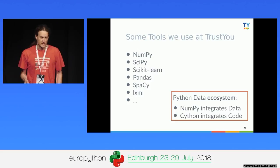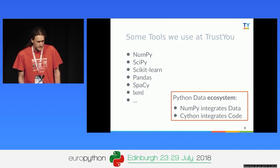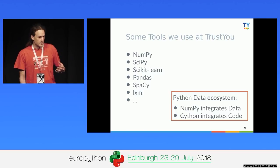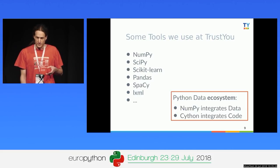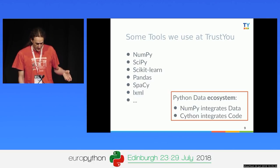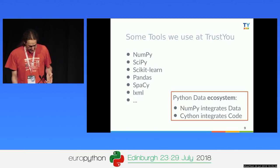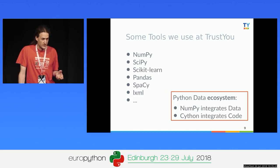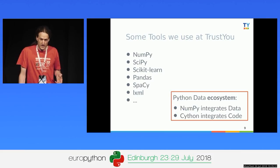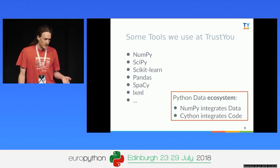These tools are part of the Python data ecosystem — integrated, everything works nicely together. A big part of that came from NumPy as a data integration layer that all tools could use to share data, even pass it into C libraries. NumPy integrates the data layer, and Cython is the way to integrate the code layer. Cython allows you to talk to native code, use tons of native C and Fortran libraries, connect them to Python, integrate them from your Python runtime.